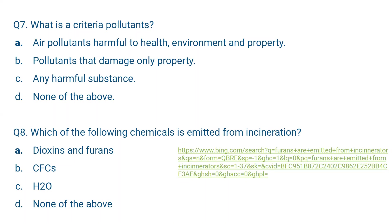Question number eight: Which of the following chemicals is emitted from incineration? In incineration, waste — generally biomedical waste — is burned at high heat in the absence of oxygen, leaving ash. The most toxic gases emitted from incineration are dioxins and furans. Other options include chlorofluorocarbons and hydrogen oxide (water). A — dioxins and furans — is the correct answer. This is an important question.